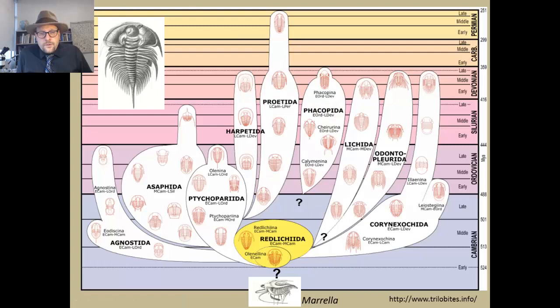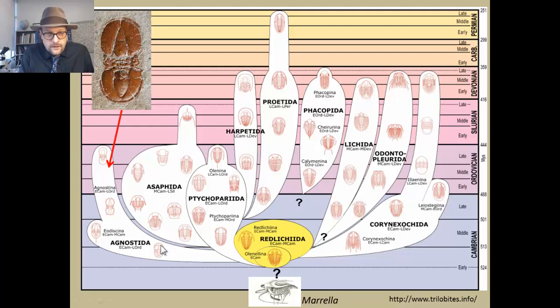Alright, I thought I would go through and discuss the various groups of trilobites, the various orders of trilobites, and give you some pictures of some of the diversity of these various groups. So trilobites originate during the early Cambrian, probably from something like Marrella, and the first group that we get is the Redlichiida.